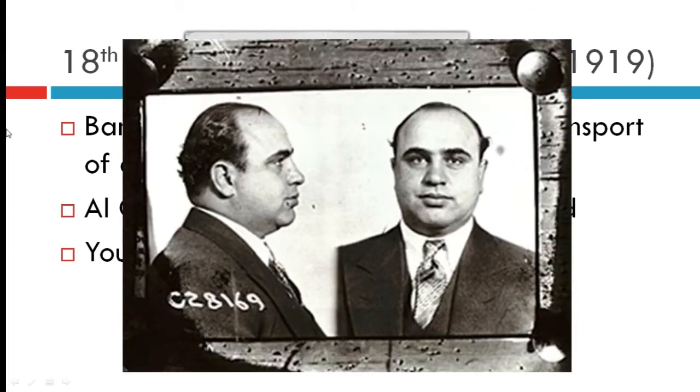Here is a bootlegger from the 1920s — she got that name from hiding her hooch in her boot. And here's a picture of Al Capone, who was finally convicted of tax evasion, never convicted on alcohol-related charges as far as we know.